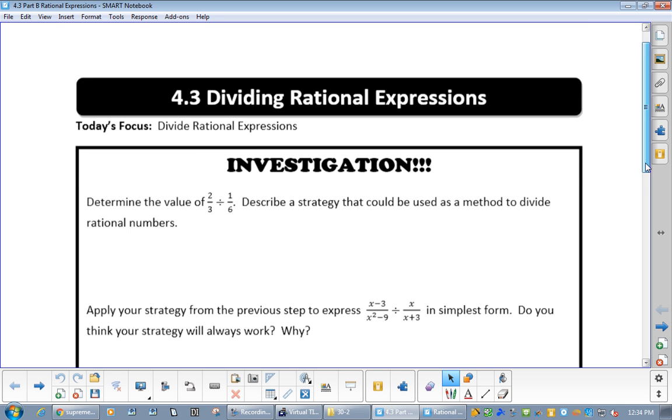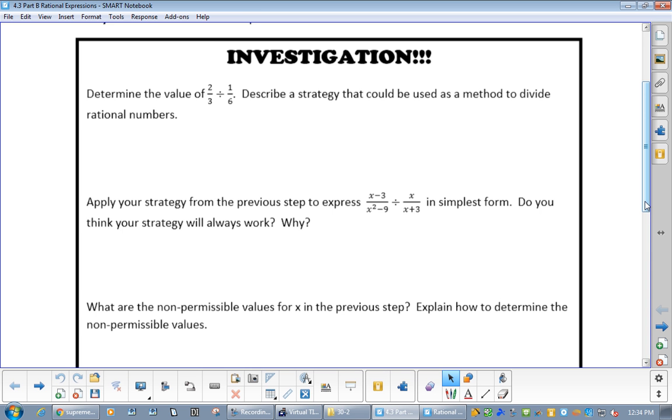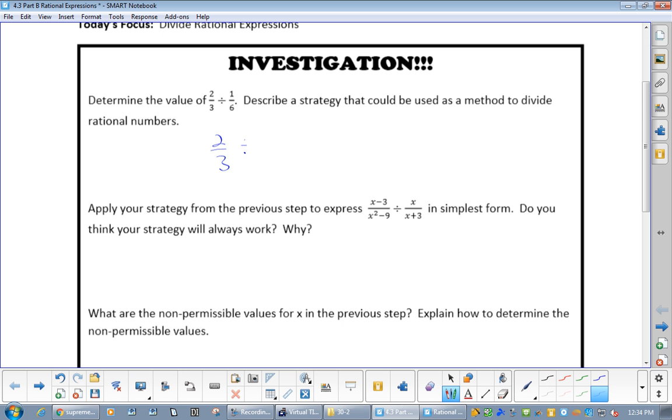But the way you did it in grade 8 is the same way we do it here. If you have 2 thirds divided by 1/6, this is equivalent to 2 thirds times 6 over 1. So there's two things that need to happen to be able to keep these equivalent. You must take the division sign and change it to a multiplication sign. You must take 1/6 and change it to 6 over 1.